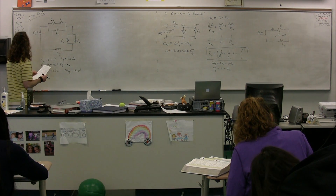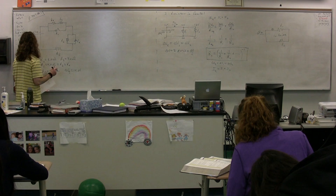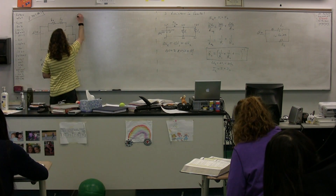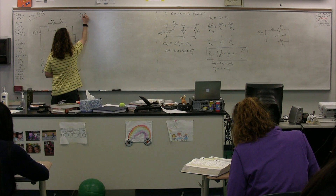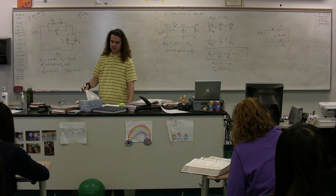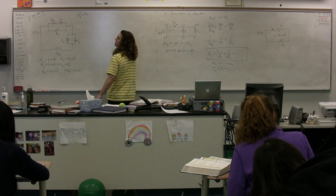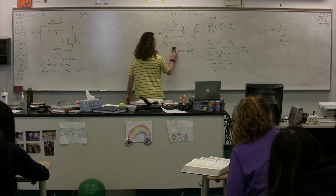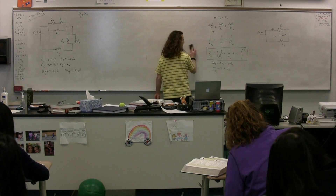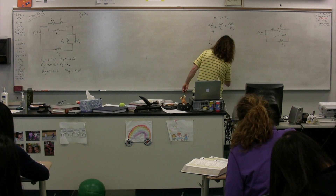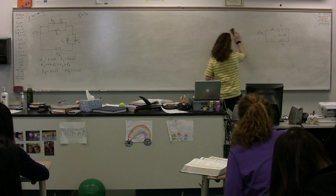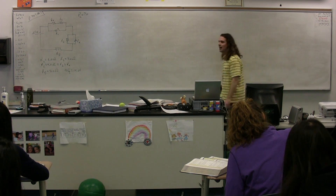We are not going to solve for what they asked us to solve for. We are instead going to figure out the power dissipated in resistor A. In other words, resistor A is converting some number of joules per second of electrical potential energy into heat, light, and sound energy. Let's start with where we're going to end, which is power. We need to figure out what we need in order to get to the electrical power.